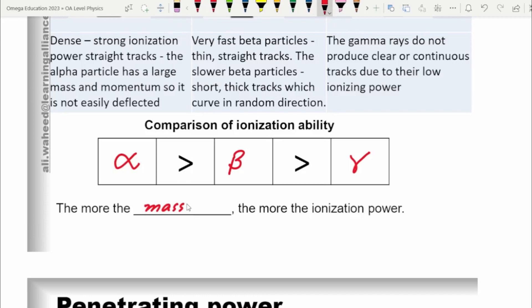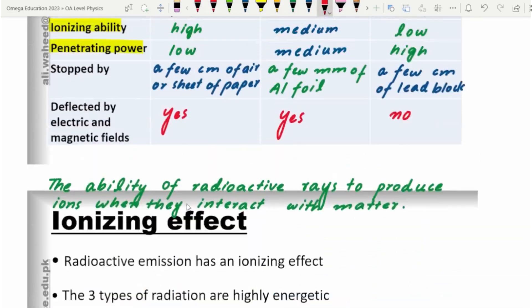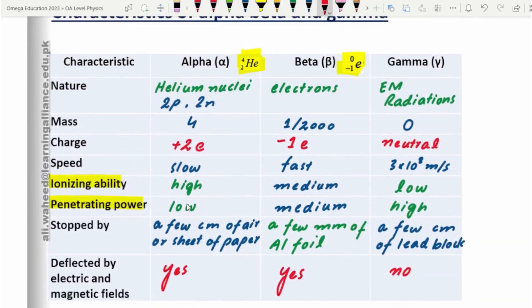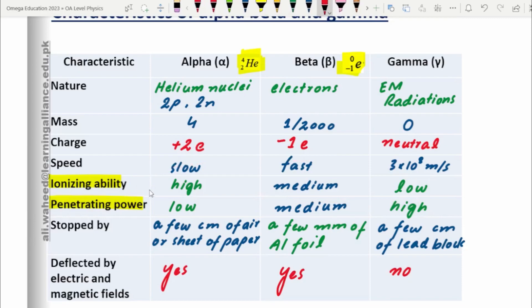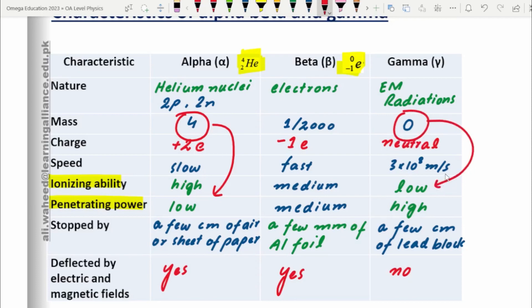From this comparison, alpha particles have the greatest ionization ability and gamma the least. Getting back to the characteristic table, in one row we have written the same thing: alpha rays have the highest ionization ability because they have the highest mass, while gamma radiations have the lowest ionization ability in comparison.